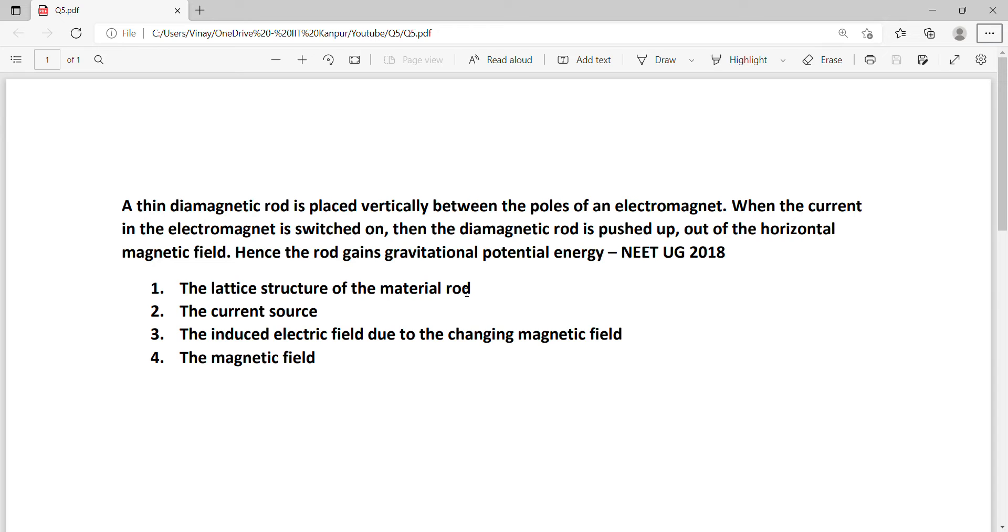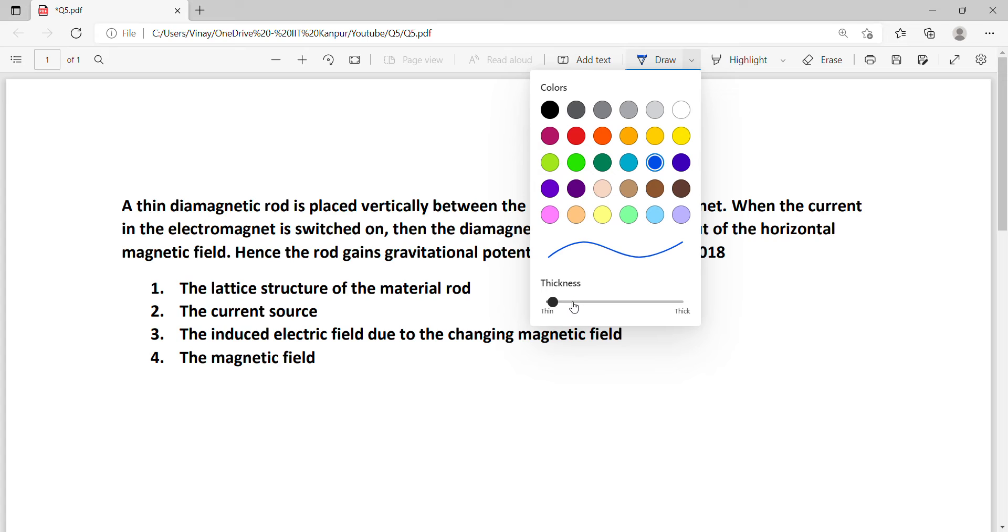Just as height increases, potential energy is stored in the object. So let's see the options. The first option is the lattice structure of the material rod. Here you can make an educated guess that at your level, for NEET level, they won't ask about diamagnetic rod lattice structure.